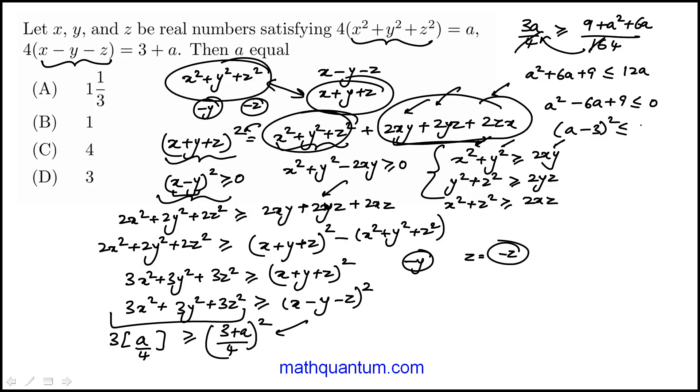And then this is a minus 3 squared is less than or equal to 0. Well, this is always positive, a minus 3 squared. So it can't be less than 0. Only possibility is that it's equal to 0, which means a must equal 3. The answer is D.